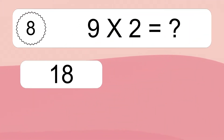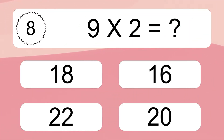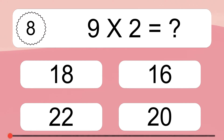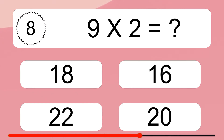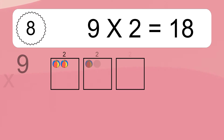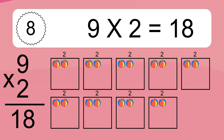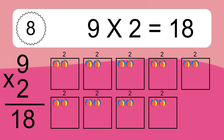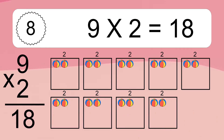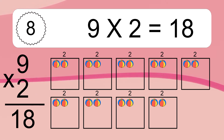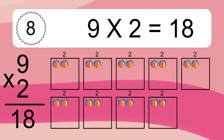9 times 2 equals what? 9 times 2 equals 18. We have 9 boxes and each box has 2 colorful balls inside. If you count all the balls in all the boxes together, you will have 9 times 2 balls. This equals 18 balls.